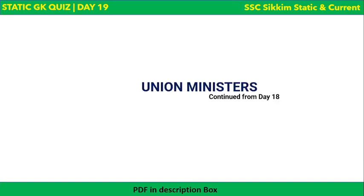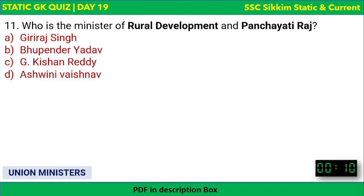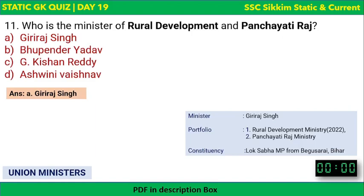Now we move to Union Ministers, continued from Day 18. First question: Who is the Minister of Rural Development and Panchayati Raj in 2022? The correct answer is Giriraj Singh. He is the Rural Development and Panchayati Raj Minister and is a Lok Sabha MP from Begusarai, Bihar. Bhupender Yadav is Labour Minister, G. Kishan Reddy is Tourism and Development of North-Eastern Region Minister, and Ashwini Vaishnaw is Railway Minister.